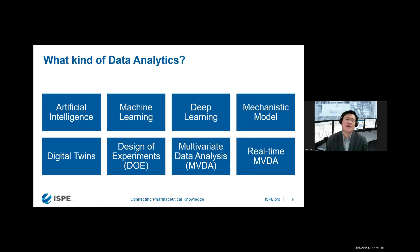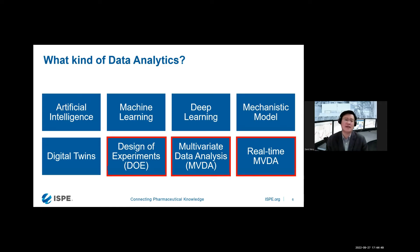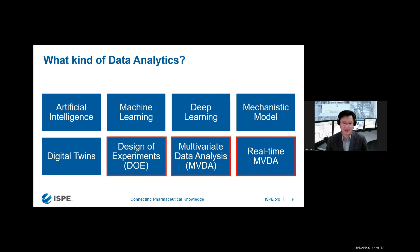What kind of data analytics are we going to use? There are many types, and for different challenges we may use different methodologies. Here I'm going to focus on three types: Design of Experiment (DOE), Multivariate Data Analysis (MVDA), and Real-time MVDA. We focus on these because they are proven technologies, supported and suggested by regulators such as EMA and FDA, and have gradually become a de facto standard in the biopharma industry.